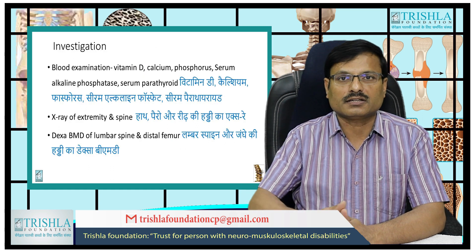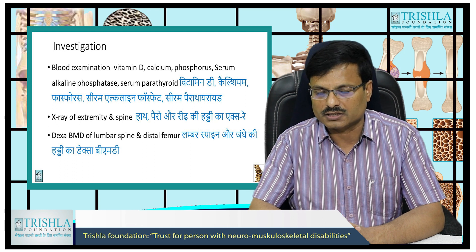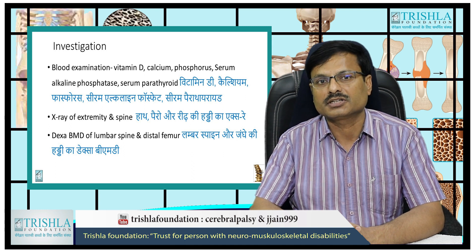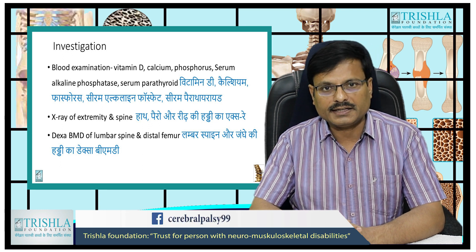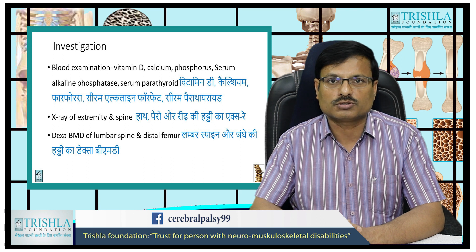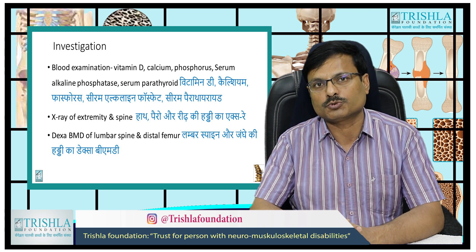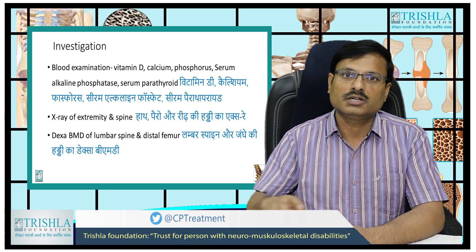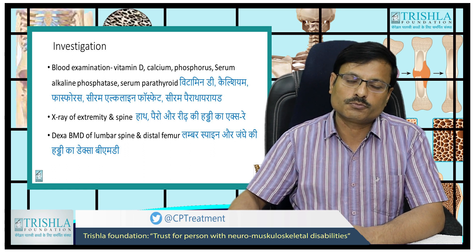If you suspect a cerebral palsy child has osteoporosis, the required investigations include blood tests for vitamin D level, calcium, phosphorus, serum alkaline phosphatase, and serum parathyroid hormone. X-rays of the extremities and spine will also give clues about osteoporosis and fractures. For final diagnosis and assessment of severity, DEXA scan is done — typically of the lower spine and proximal femur.